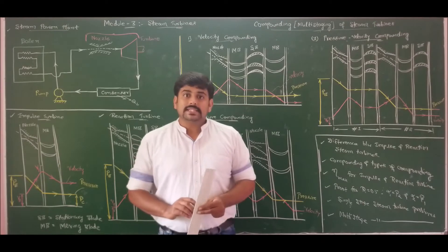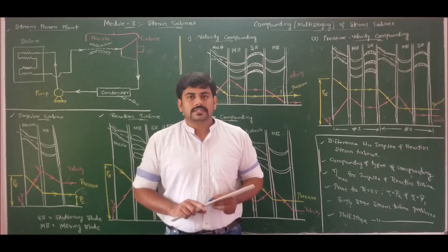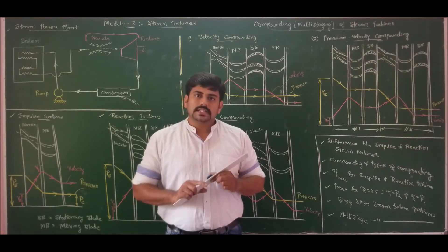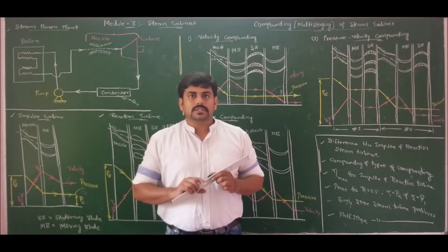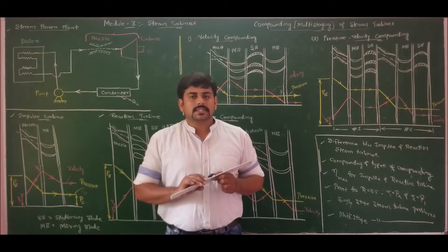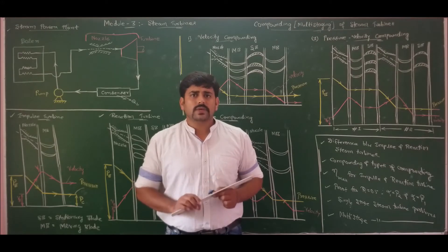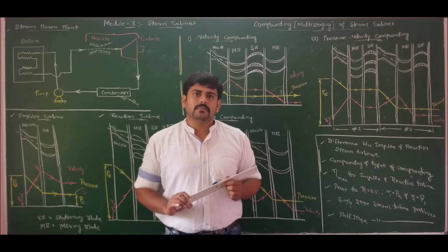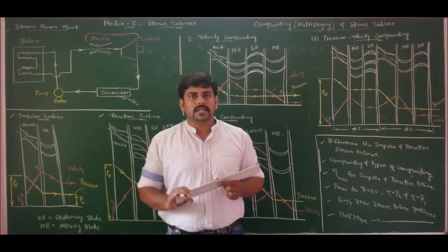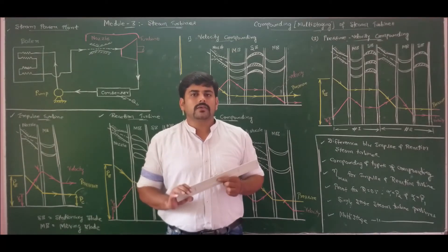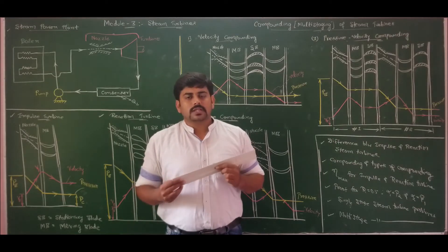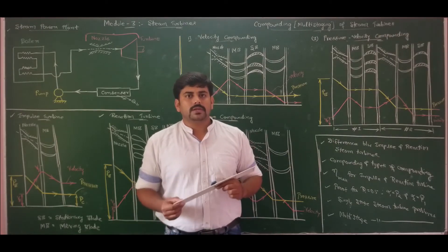Compounding is nothing but multi-staging. Compounding is necessary in steam turbines because the discharge velocity V2 is high, making utilization less for a single stage. For maximum utilization, V2 should be minimum — V2 is minimum when it equals the flow velocity Vf, meaning the discharge velocity of steam is purely axial. To maximize utilization of the kinetic energy present in the steam, we use multi-stages or compounding.